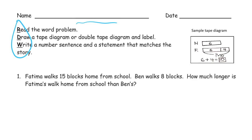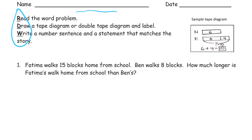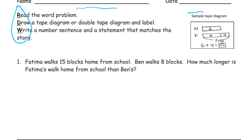Reading the word problem first — try to think of it as a story. They're really short, like two-sentence stories usually. There's not that much that happens, and then there's a question after the story. I try to summarize the story, and that's usually pretty easy to do as long as you can read it. Then write a number sentence and statement that matches the story. Here's our sample example tape diagram. Most of them are going to look something like that.